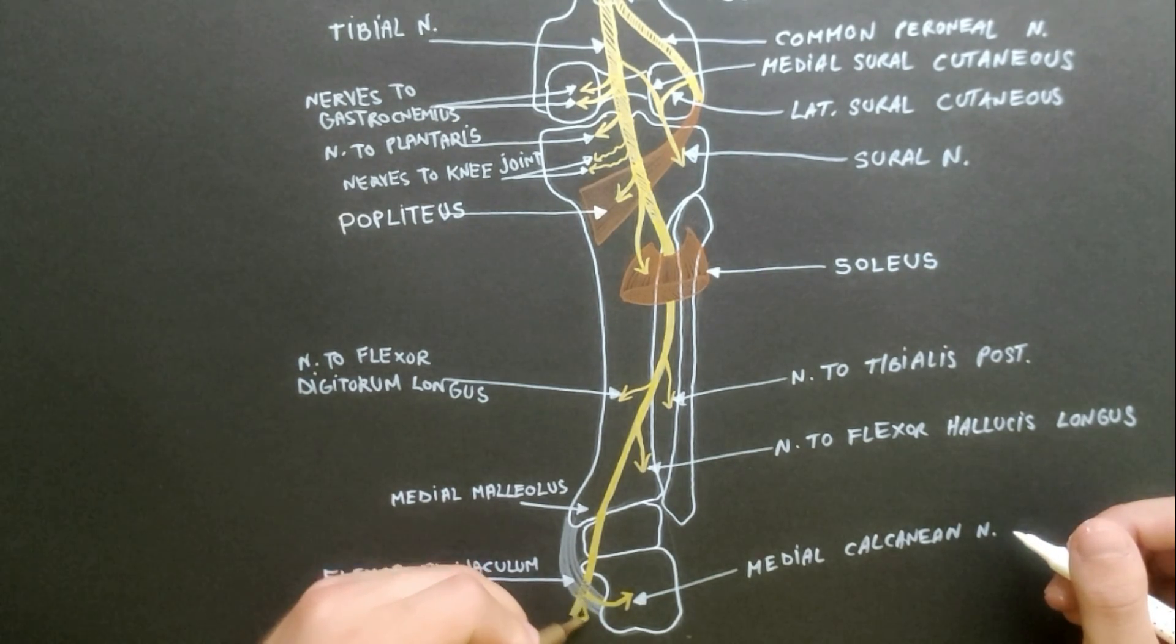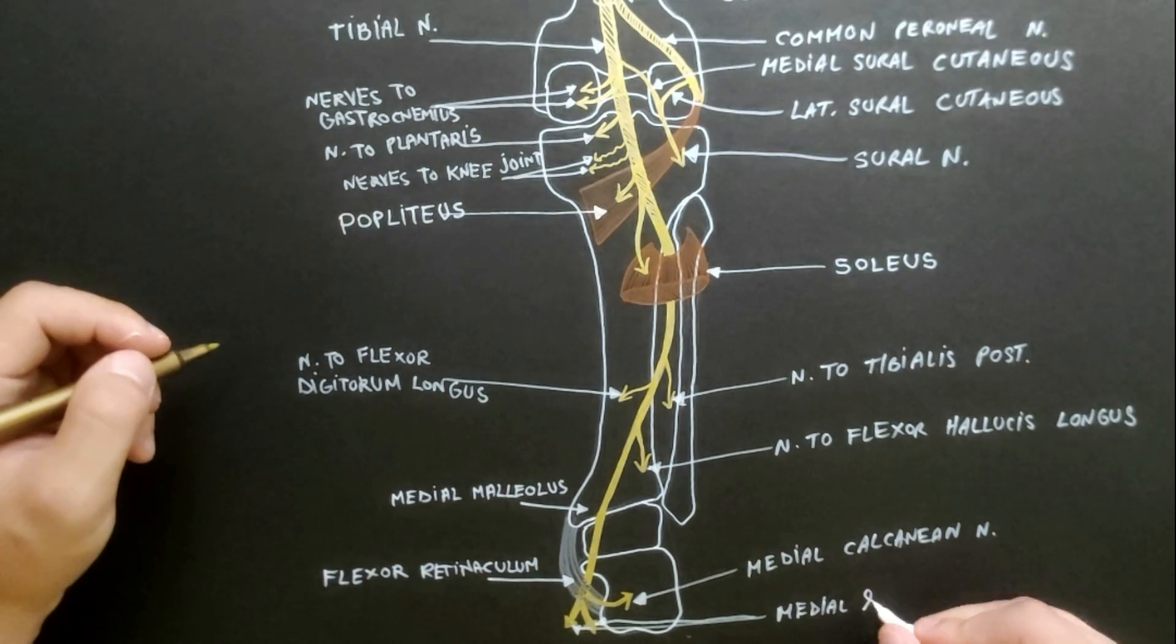Distal to this branch, the tibial nerve splits into its terminal branches, the medial and lateral plantar nerves, which will be discussed in detail in another video.